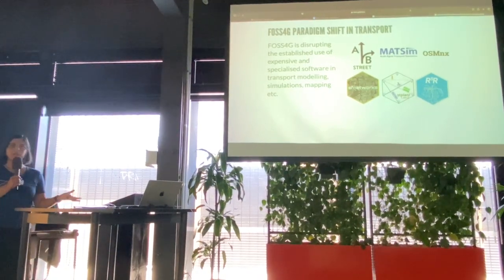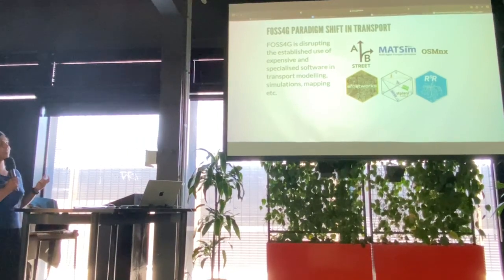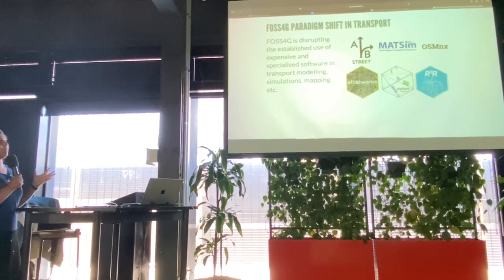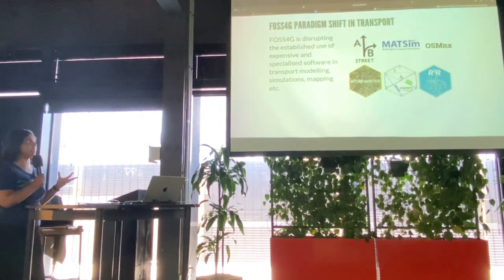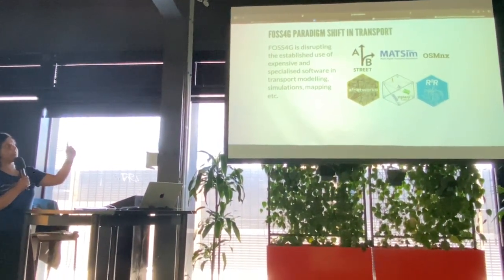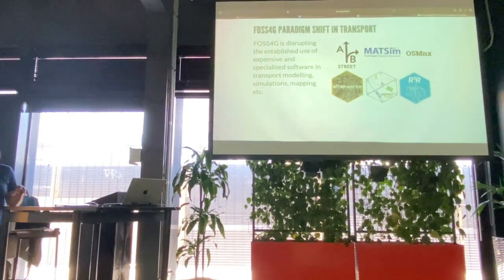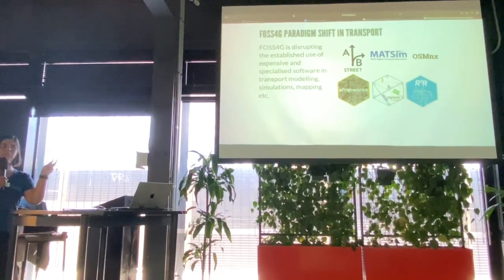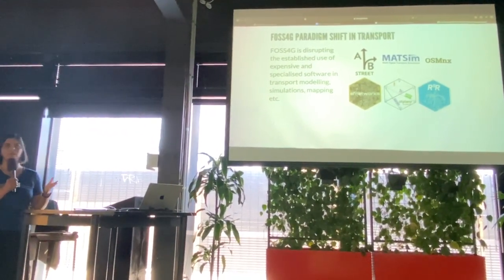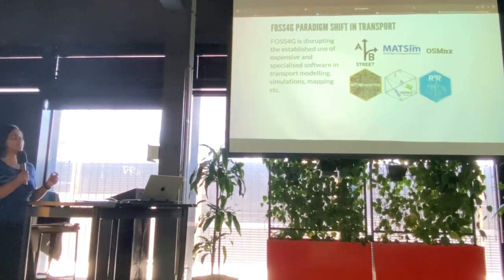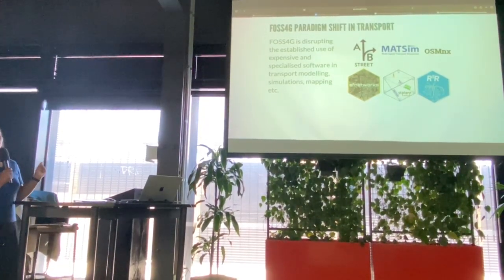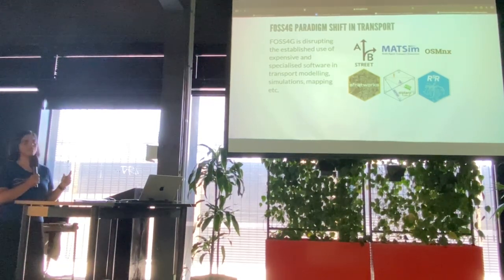In transport, there's a bit of a paradigm shift happening through FOSS4G, and I find this really exciting. These packages are really disrupting things like transport modeling, running big simulations, and mapping. AB Street is actually an amazing project written in Rust. You basically can run an A/B test on your street in a city — for example, what if I change the street to have more cycle lanes? What will happen to traffic volumes and throughputs? It allows you to play with different scenarios in the urbanism context, and you can download AB Street and create scenarios for your own city.